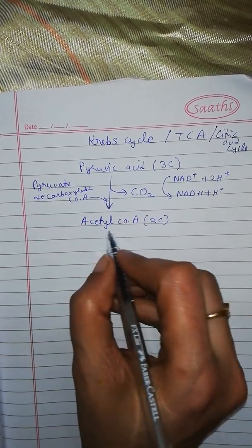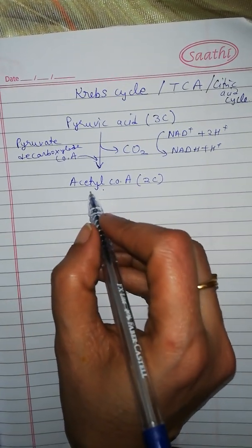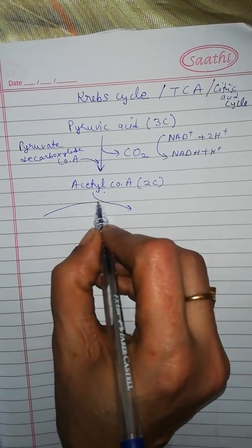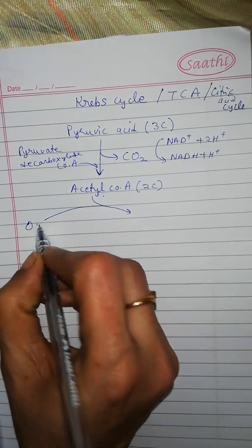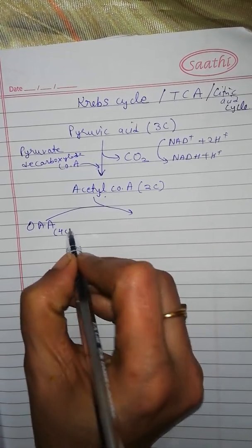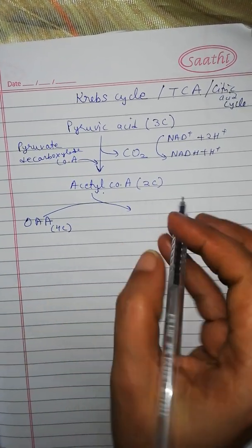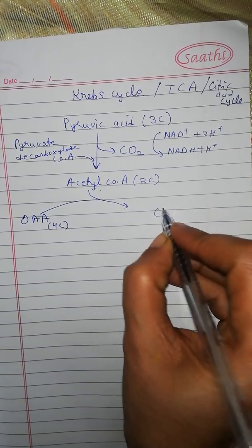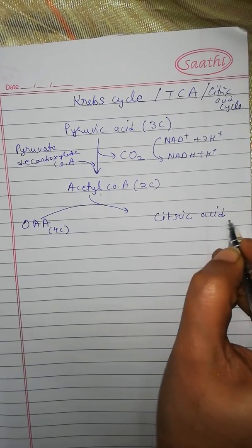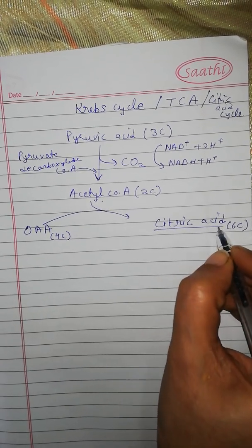Now this acetyl coenzyme A enters the citric acid cycle. This acetyl coenzyme A gets condensed with oxaloacetic acid, which is a four-carbon compound. When acetyl coenzyme A condenses with oxaloacetic acid, a six-carbon compound is formed which is called citric acid.